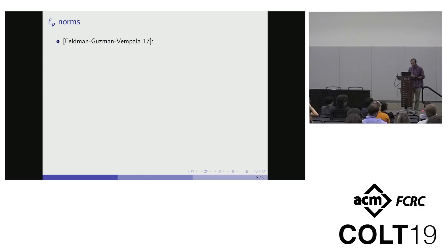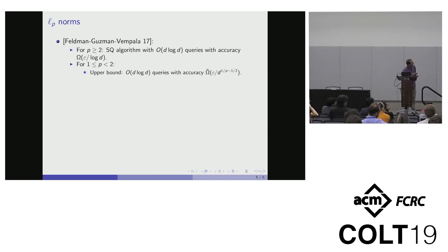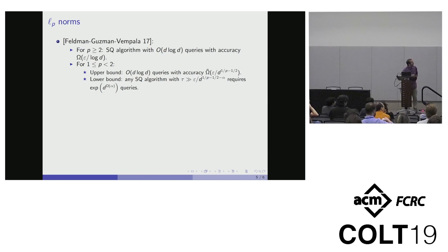In this paper by Feldman, Guzman, and Vempala, who first studied this problem, they showed SQ algorithms as well as lower bounds for doing this when the underlying norm space is the L^p norms. They showed that for p greater than two, there is an SQ algorithm which makes O(d log d) queries with accuracy epsilon over log d. But for p between one and two, they showed an upper bound but you need accuracy epsilon over d^(1/p - 1/2). In addition, they showed that if your algorithms have accuracy parameter bigger than this factor, then you need exponentially many queries — you can't improve much on their upper bound.